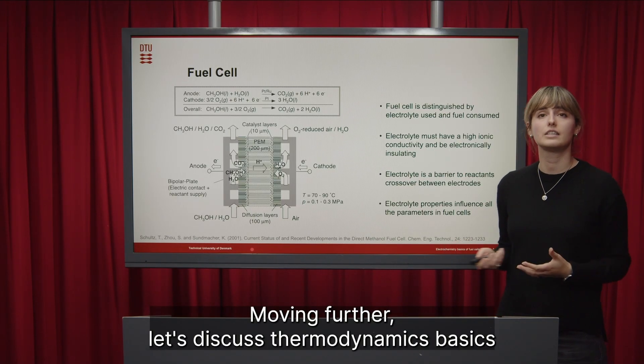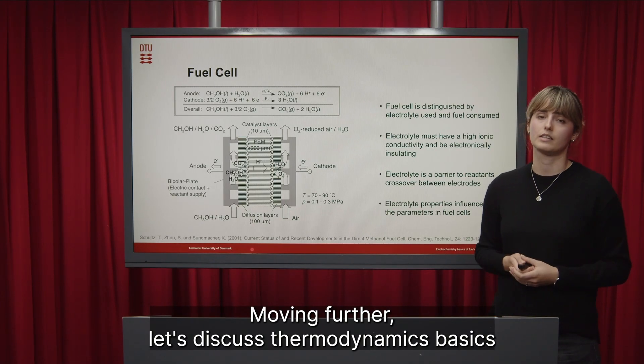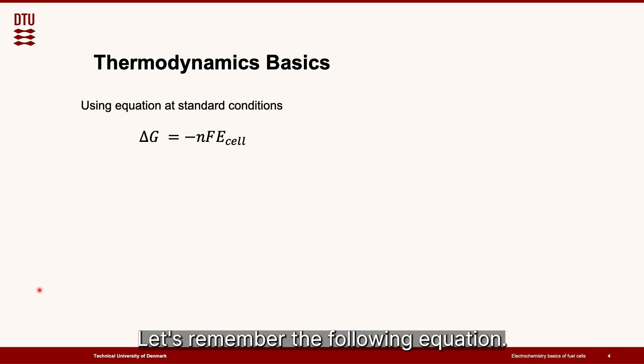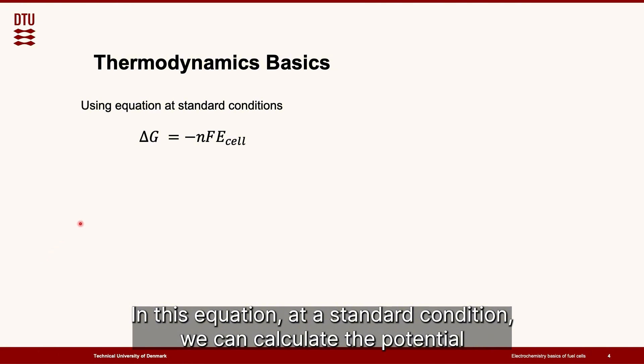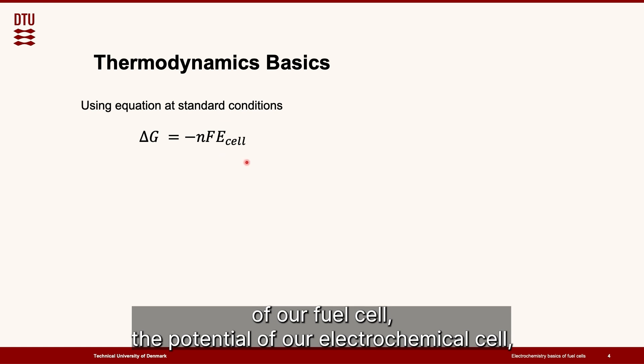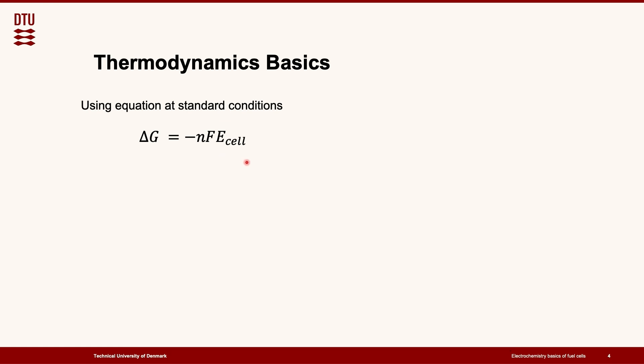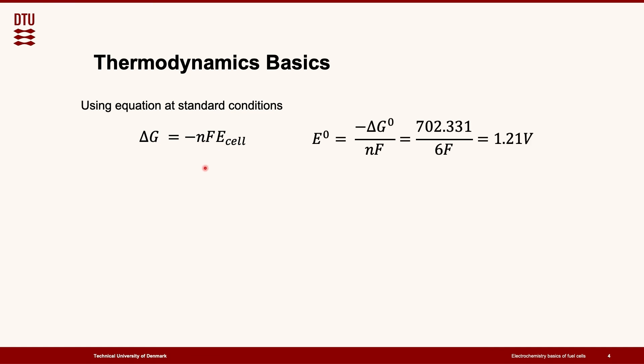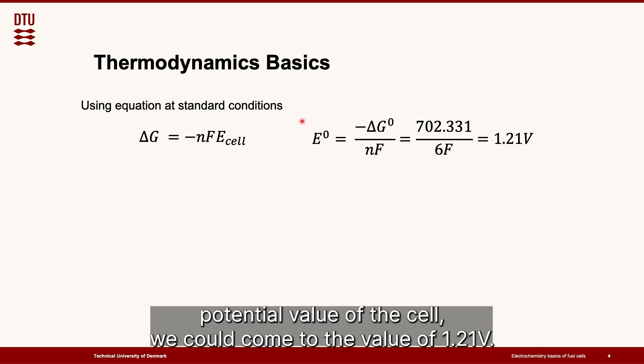Moving further, let's discuss thermodynamics basics in our fuel cell systems. Let's remember the following equation. In this equation, at a standard condition, we can calculate the potential of our fuel cell, the potential of our electrochemical cell by using the standard values that could be found in the tables. By calculating the standard potential value of the cell, we could come to the value of 1.21 volts.